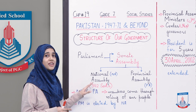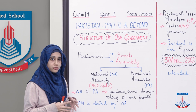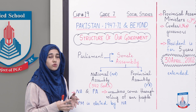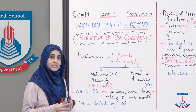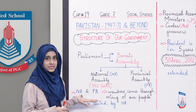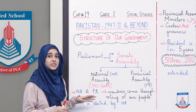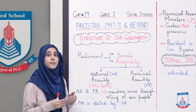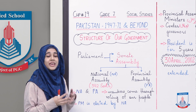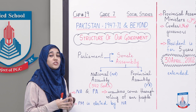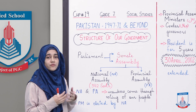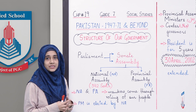National assembly ki total 342 seats hain. Warnah kafi arsa pehle there were 300 seats, kyunke us waqt abadi kam thi, and now it is 342 seats. National assembly aur provincial assembly mein jitne bhi members hain, unhe hum elect karte hain, yaani ke woh humare votes ke through aate hain. Woh humein national assembly aur provincial assembly mein represent karte hain, humare masle aage le kar jaate hain aur jake unko represent karte hain.